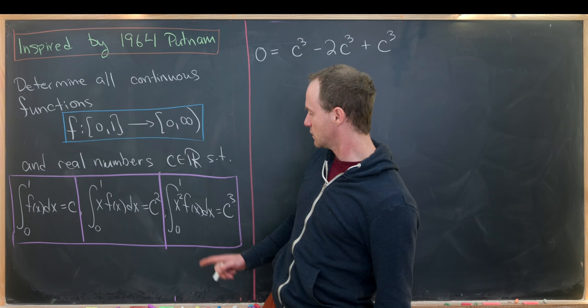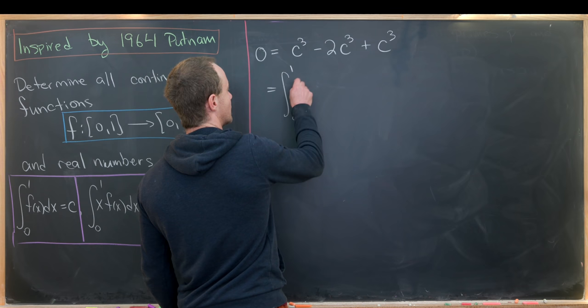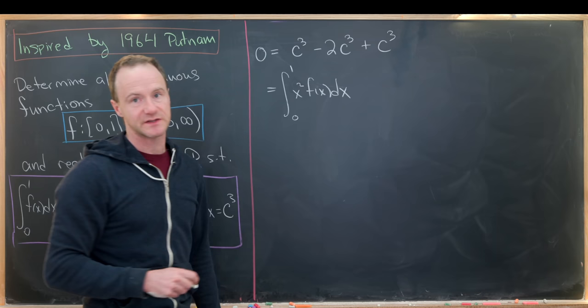We'll notice that this is a c³ right here, this integral from 0 to 1 of x²f(x). So let's rewrite this as that integral: integral from 0 to 1 of x²f(x)dx. So that's the first appearance of c³.